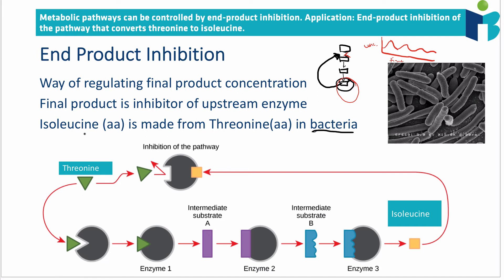In humans, isoleucine is an essential amino acid, meaning we have to take it in through our diet because we can't make it ourselves — we have to eat isoleucine. In bacteria, however, isoleucine is made from another amino acid called threonine, and isoleucine is an example of an end product inhibitor.